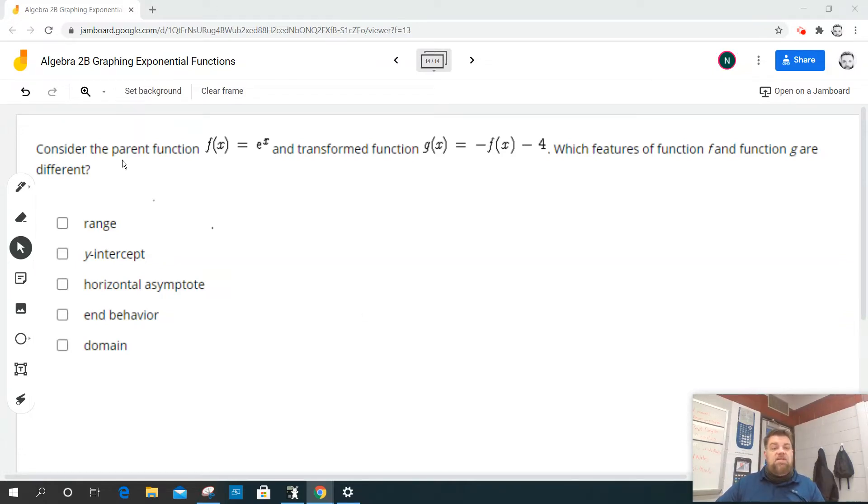All right, so for this one it says consider the parent function f of x equals e to the x and then the transform function g of x, which is negative f of x minus 4.